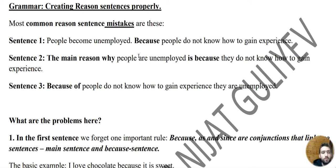We use nouns or noun phrases after BECAUSE OF, DUE TO, and OWING TO — but after BECAUSE we use a full sentence.